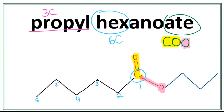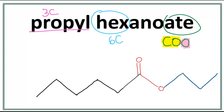Since we are drawing a line structure, we don't really need to draw this carbon right here. So let's get rid of this carbon and the numbers. This is the structure for propyl hexanoate. The side chain always attaches with this oxygen right here, and the parent chain always attaches with this carbon right here.